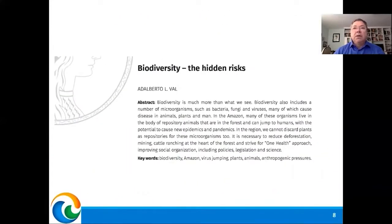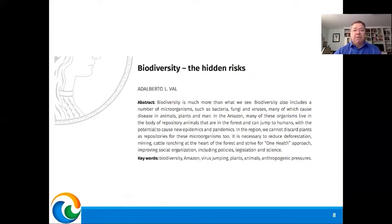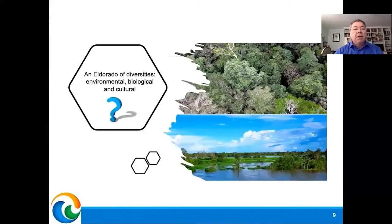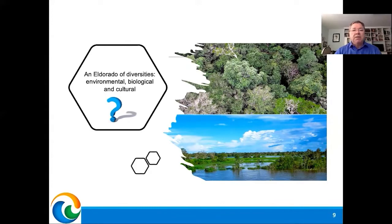But also, the Amazon may hide many dangers, such as pathogenic viruses, bacteria, and fungi that can jump to humans that invade the forest. In short, the Amazon is an Eldorado of diversities — environmental diversity, biological diversity, and also cultural diversity. We have more than 300 different languages spoken in the Amazon.